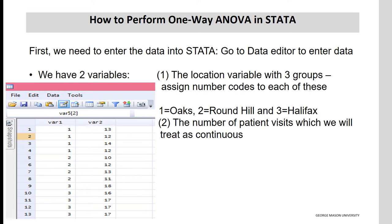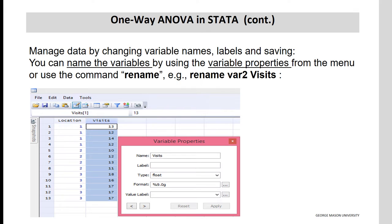To analyze the data for this problem in STATA, first enter the data in the STATA spreadsheet by going to the data editor. Next, enter the variables. In this study, we have two variables: the location variable with three groups. For this categorical variable, assign number codes to each group — one equals Oaks, two equals Round Hill, and three equals Halifax. The second variable is the number of patient visits, treated as continuous. You can manage the data by changing variable names, labels, and saving, using variable properties from the menu or the command rename — for example, rename var to visits.